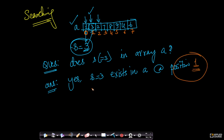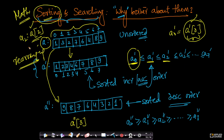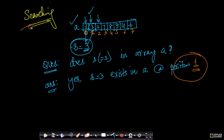These are the types of questions we answer in searching. The examples given here are the simplest possible. Sorting basically means rearranging the elements of an array in ascending or descending order. In searching, you are given a query number and you must determine whether that number is present in a given array.